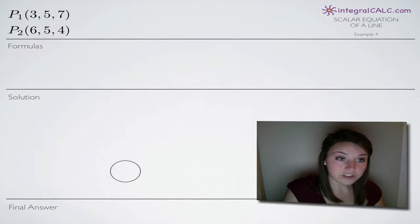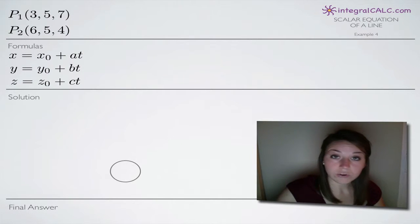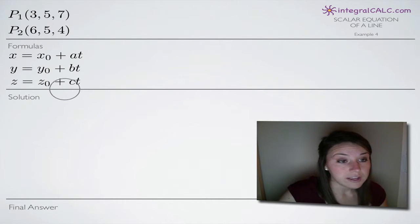So along with this information, we're going to need a couple of formulas in order to find the scalar equations: x = x₀ + at, y = y₀ + bt, and z = z₀ + ct.